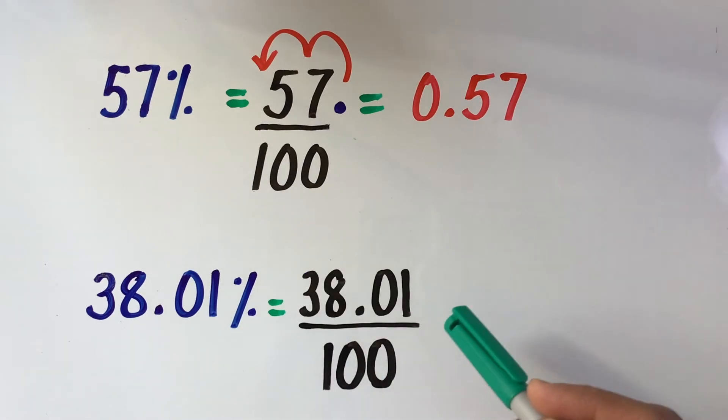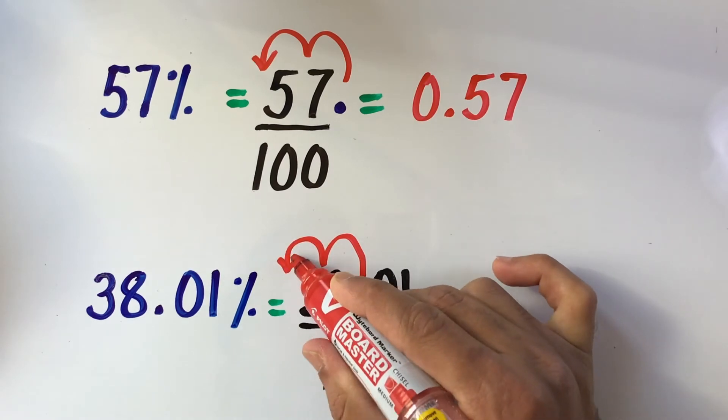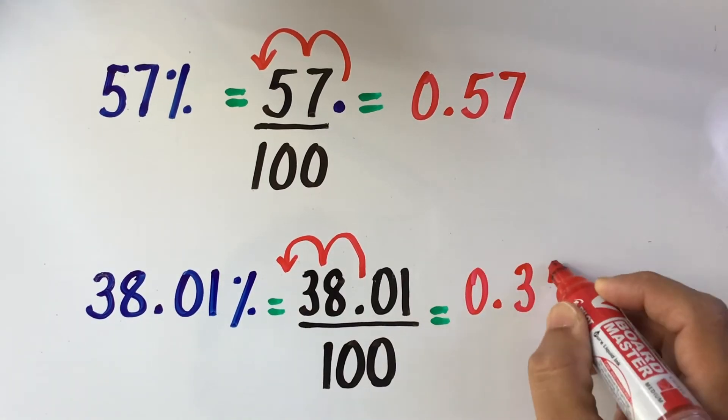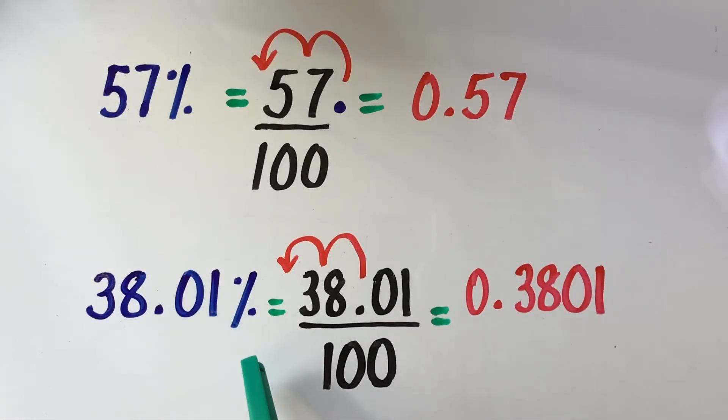Then we rewrite it as a fraction over 100, move the decimal point two places to the left which gives us 0.3801. 38.01% is same as 0.3801.